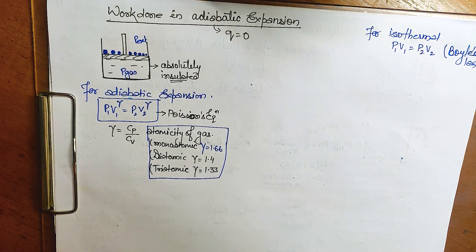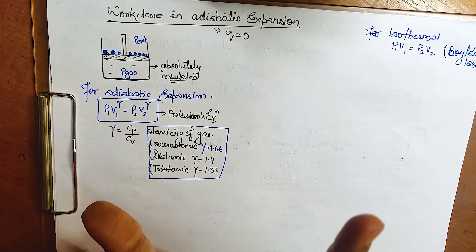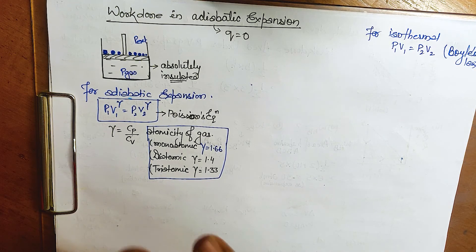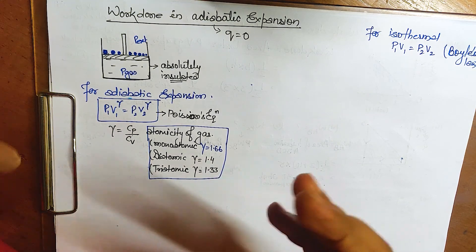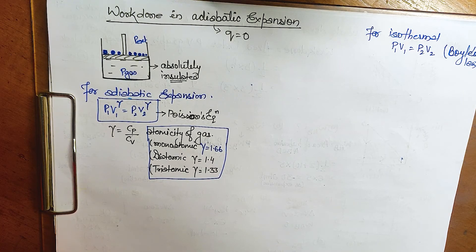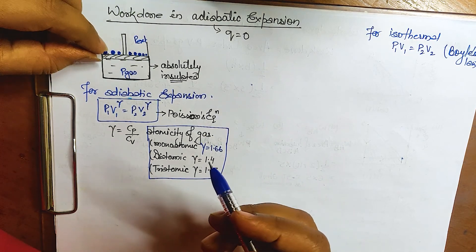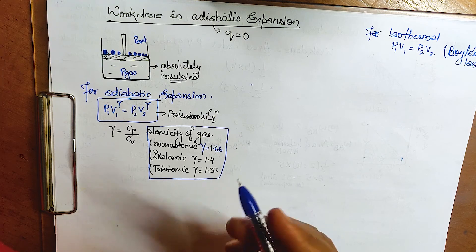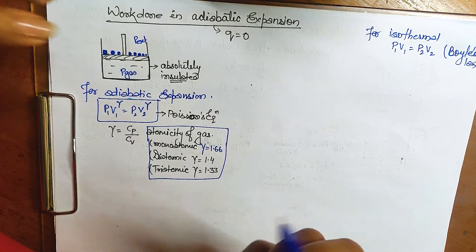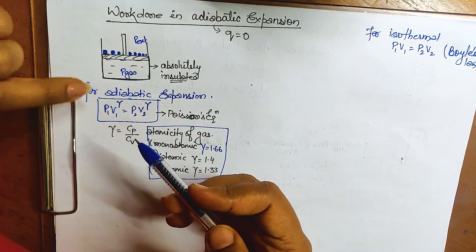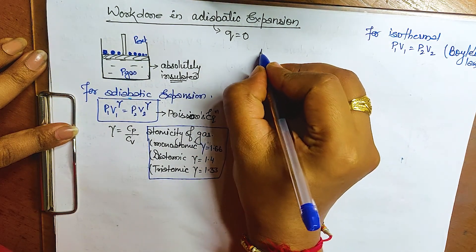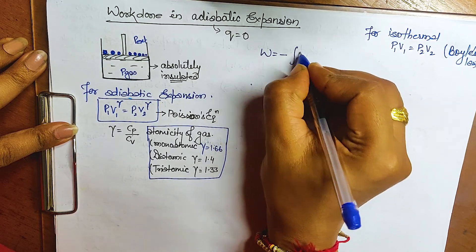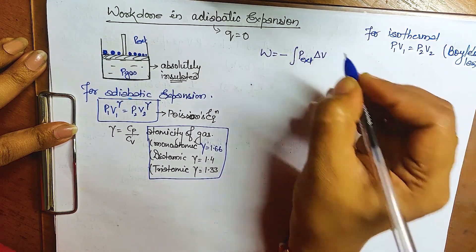First we achieve equilibrium where p_external equals p_gas, so there is neither expansion nor contraction. But if we remove a small part of the mass, dp decreases and expansion occurs. So here also we will use the same formula: W = −p_external · dV, with limits from V_initial to V_final.